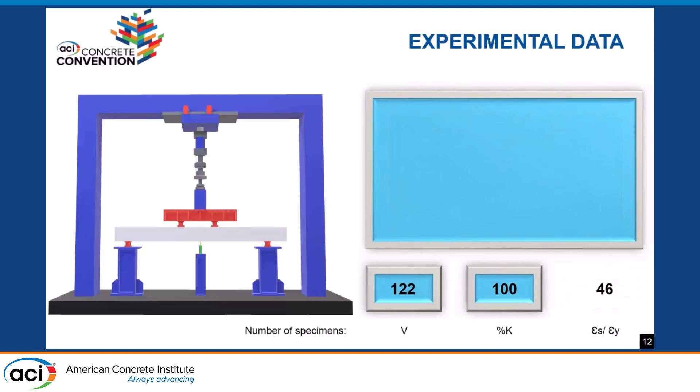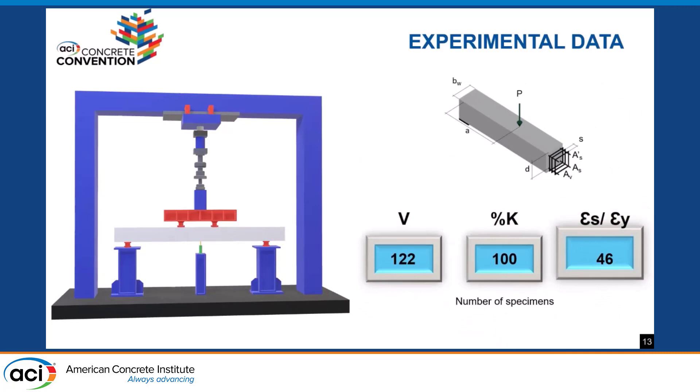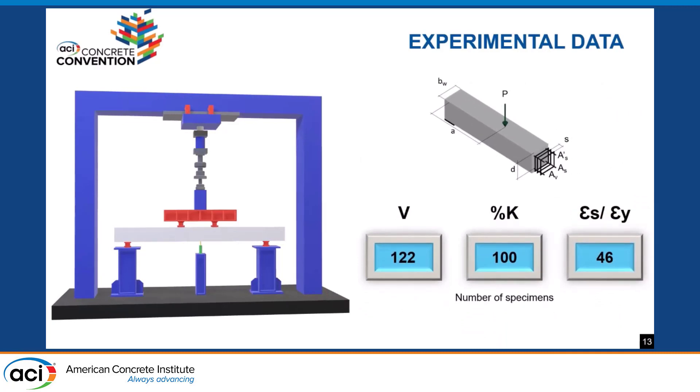The third set measures the strain in stirrups and crack width. We choose the maximum stirrup strain, normalize it by the yielding strain, and correlate it to crack width. In summary, you have three sets, all of them correlated to crack widths, and each specimen has its own geometry, material properties, and reinforcement conditions.